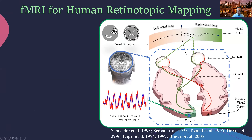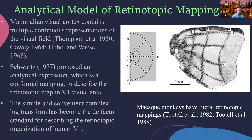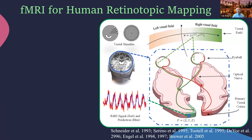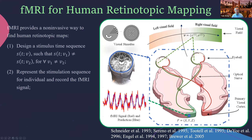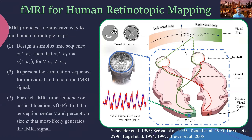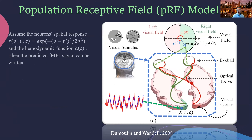For the animal model we can use electrodes to get invasive measurements, but for humans we need a non-invasive approach. Functional MRI provides a good non-invasive way to find the human retinotopic matching. The basic procedure is: people view visual stimuli such as rotating bars or eccentricity rings, while fMRI records the response on each voxel in the visual area. Visual stimulus from the left eye goes to the right hemisphere and vice versa, and for each functional MRI sequence we find the perception center and perception size.